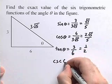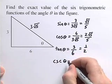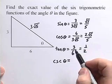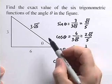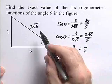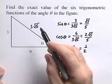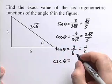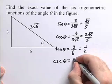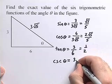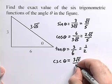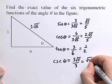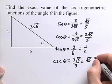The cosecant of theta will equal the hypotenuse divided by the opposite side, so we'll have 3 times the square root of 5 divided by 3, which is equal to the square root of 5.